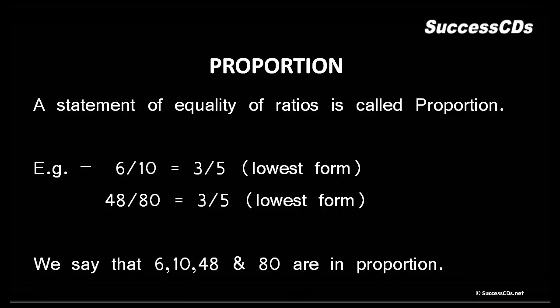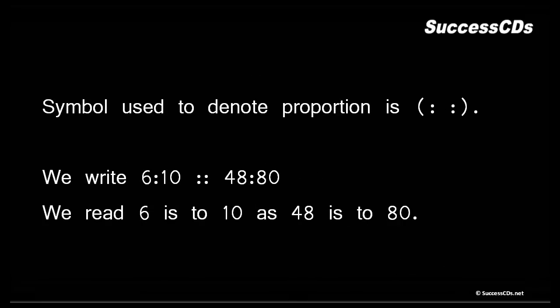Thus we can say that 6, 10, 48 and 80 are in proportion. Why we said that these numbers are in proportion? Because they gave us the same ratio after being divided. Thus we write 6:10 is proportional to 48:80, and we read it like '6 is to 10 as 48 is to 80'.